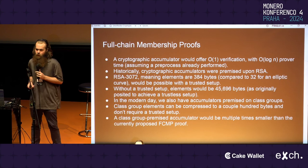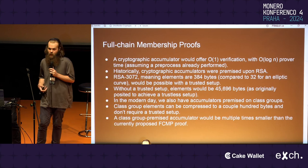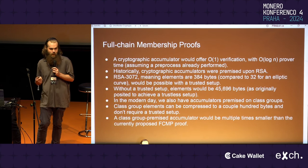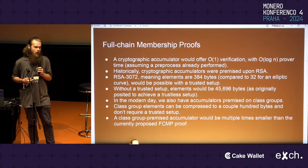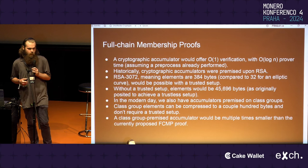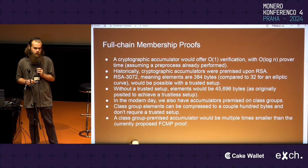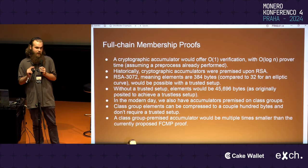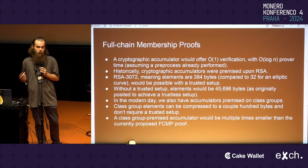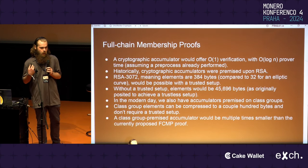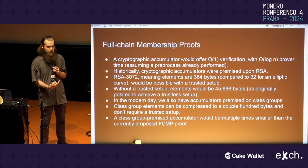That leads to one final option: class groups. Class groups don't have a trusted setup and aren't 46 kilobytes — they're actually just a couple hundred bytes. Because of that, the full proof around them would be roughly six times smaller than the currently proposed proof, and the currently proposed proof is linear in time to verify. This accumulator proof would be O(1) — no matter how large our output set is, it would be a constant amount of time to prove membership.